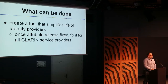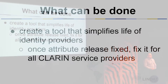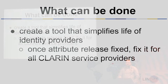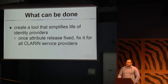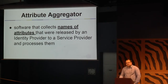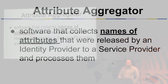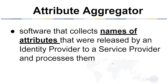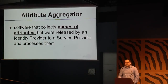Just imagine you are a maintainer of an IDP and you get 30 emails from 30 service providers in the SPF asking you to fix the attribute release problem. The solution to this is the attribute aggregator. This is a tool we created in the Clarion Plus project. It collects names of released attributes — only the names, not the values — and it processes them and creates statistics. From a technical point of view the processing is much more difficult than just collecting names, but it is a simple tool which can really help us achieve our goals.